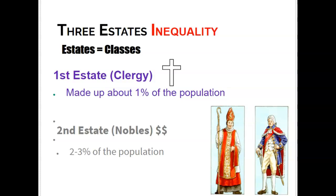France at the time had a society structured on what we call the three estates — think of these as different classes: upper, middle, and lower. The first estate is the clergy — the cardinals, bishops, and priests working within the church. They make up a tiny fraction of French society but play a major role in terms of influence. The second estate is the nobility — the aristocracy, people with land, money, and title who lived lavishly and attended fancy parties at the Palace of Versailles.